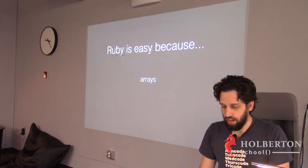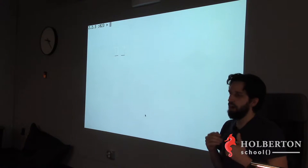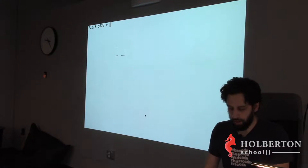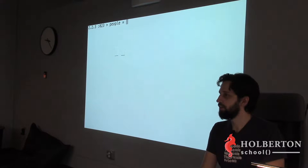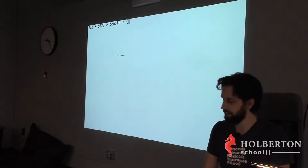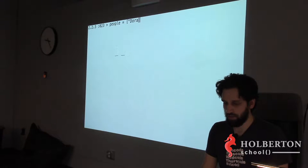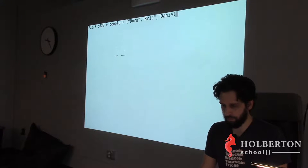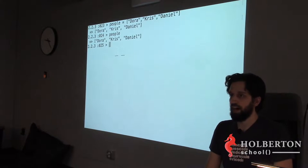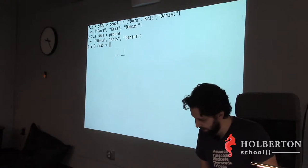Now let's talk about arrays. To create an array of three elements — 'Daniel,' 'Dora,' and 'Chris' — you use square brackets: `people = ['Daniel', 'Dora', 'Chris']`. Curly braces are used for something else in Ruby — that's actually the next slide.